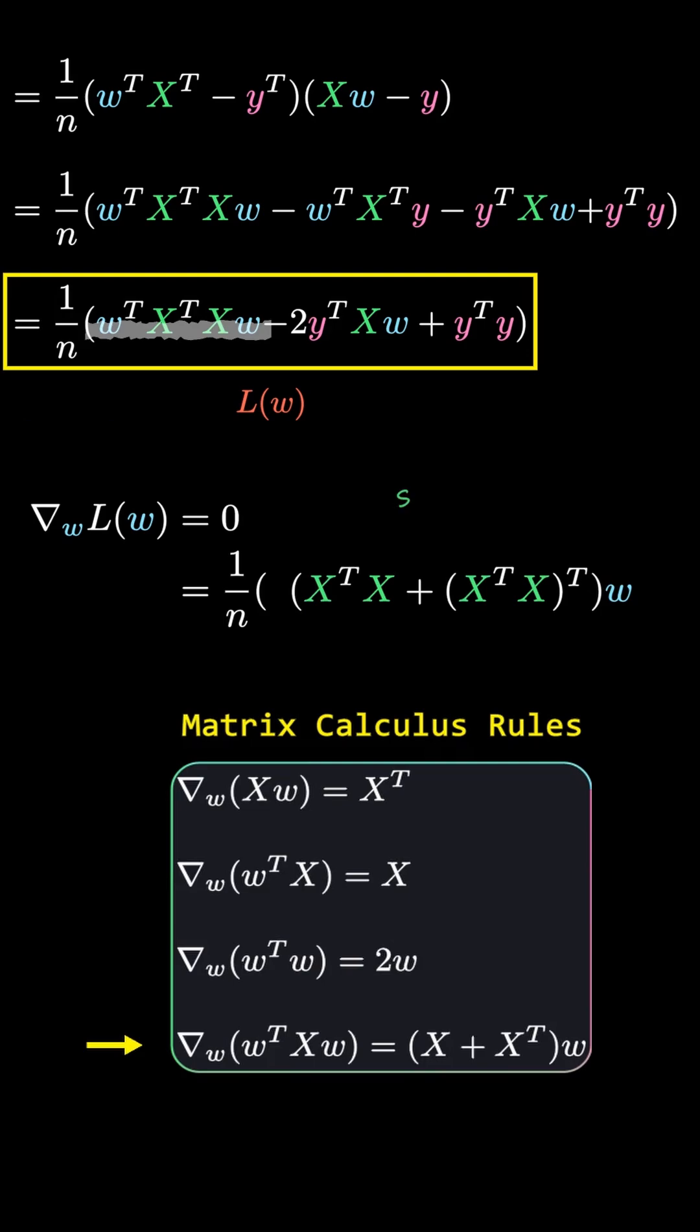When any matrix X is multiplied as X transpose X, the result is a symmetric matrix and it's also positive semi-definite.